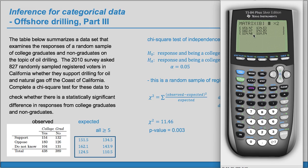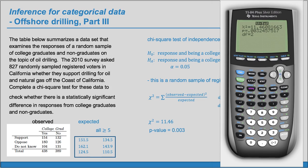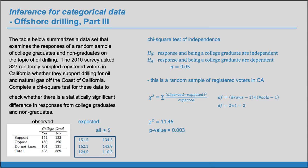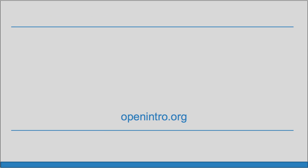So now we have our p-value. It's very small — it's less than alpha. So our conclusion is reject H sub 0. And if we reject H sub 0, we do have evidence for H sub A. So we have evidence that response and being a college graduate are dependent. That's it for this video. For more free resources, check us out at openintro.org.